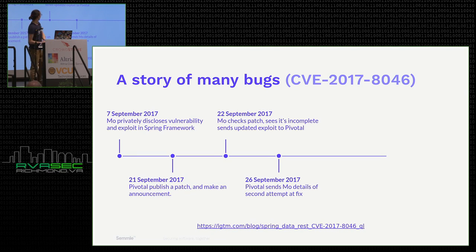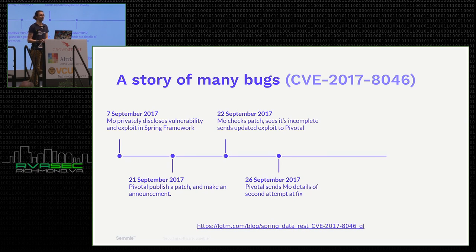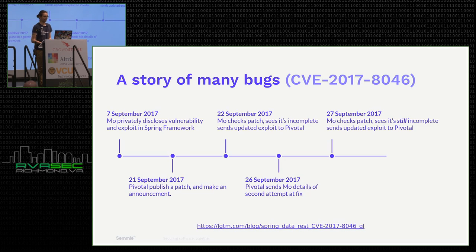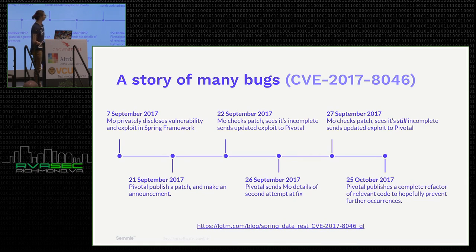A few days after that, Pivotal — rather than publishing straight away — privately sent the patch details to Mo for him to verify whether it was actually complete. The next day, Mo discovered it was incomplete and sent an updated exploit. At that point they decided to refactor that part of the code base to significantly reduce the chances of those mistakes happening. On the 25th of October, they released their final patch, which did address the vulnerability properly.